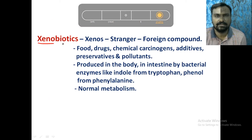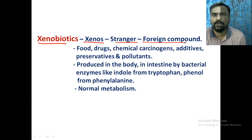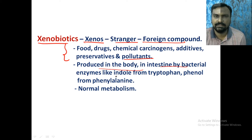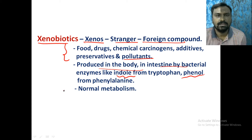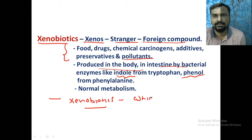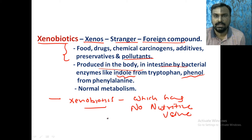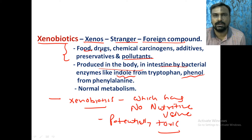So what is xenobiotics? Xenos means stranger, foreign compound. It may be food, drug, chemical, carcinogen, additives, preservatives, and pollutants. They can also be produced in the body in the intestine by bacterial enzymes — like indole from tryptophan, phenol from phenylalanine — or during normal metabolism. Xenobiotics are all compounds which have no nutritive value and are potentially toxic. So food, drugs, chemicals, carcinogens, additives, preservatives, indole, and phenol — all these compounds can be called xenobiotics.